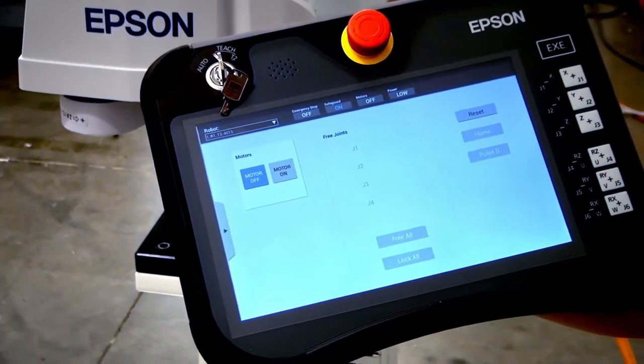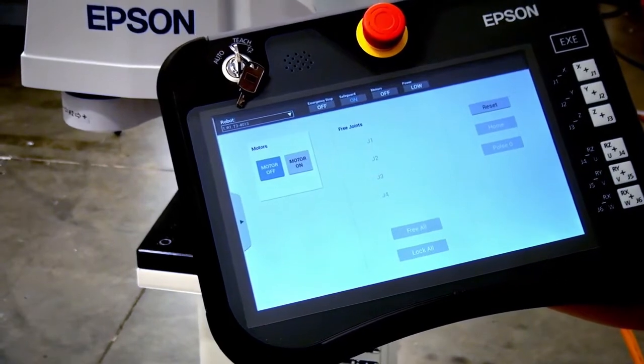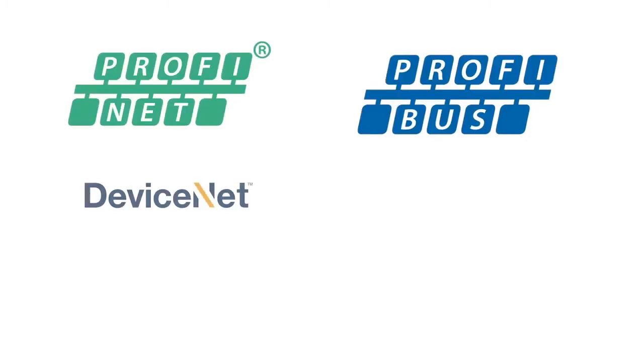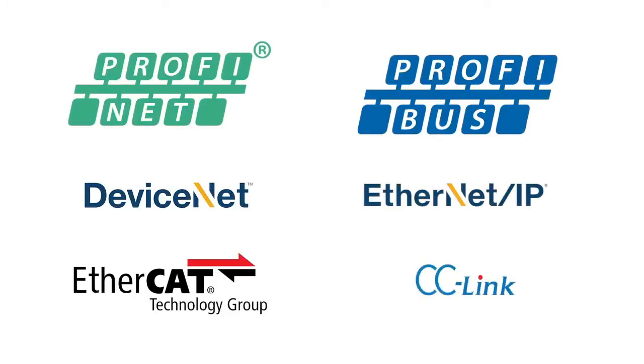There are a number of key options you can purchase for the robot. This includes the teach pendants I mentioned earlier, field bus communication protocols which include PROFINET, PROFIBUS, DeviceNet, Ethernet IP, EtherCAT and CC-Link.